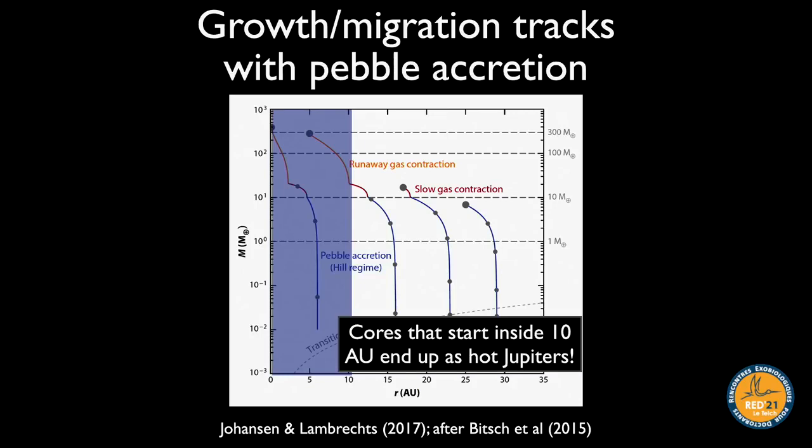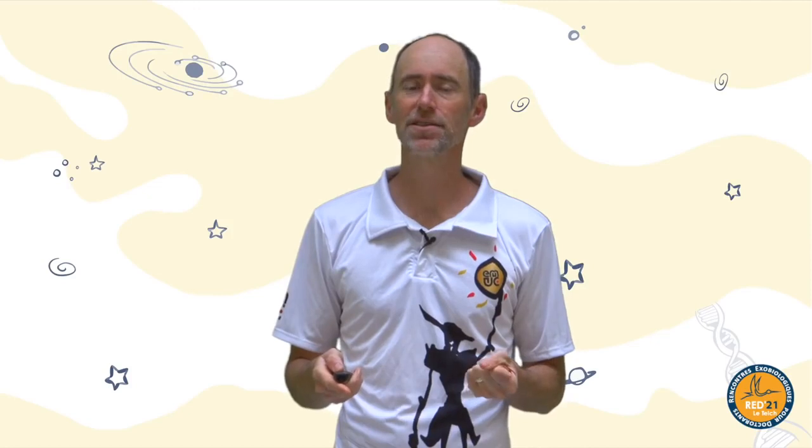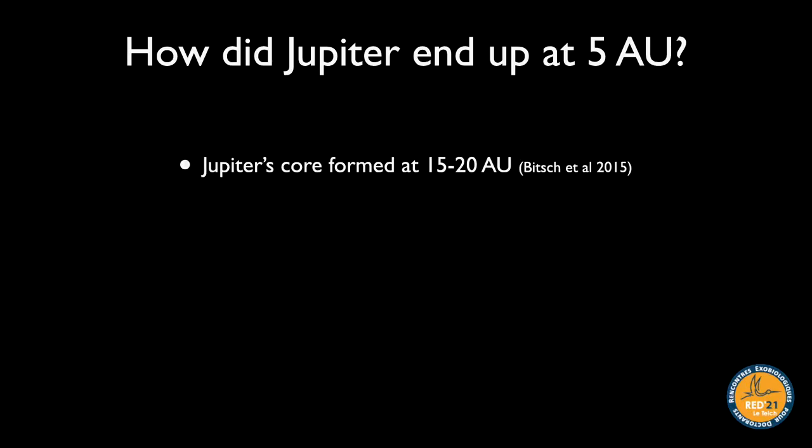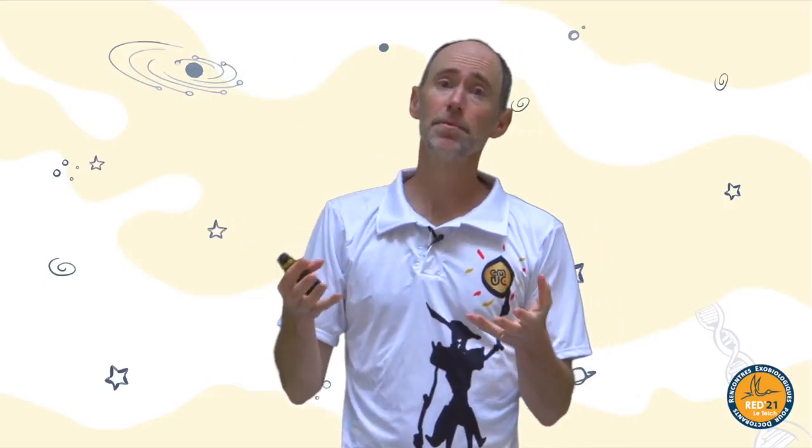In this kind of model, everything that formed inside about 10 AU ends up as a hot Jupiter — there should be a huge number of hot Jupiters, or maybe no large cores ever formed within 10 AU. This raises a philosophical question: if these processes are correct, how did Jupiter end up at 5 AU? Why do we have any giant planets on wide orbits given that migration pulls them inward?